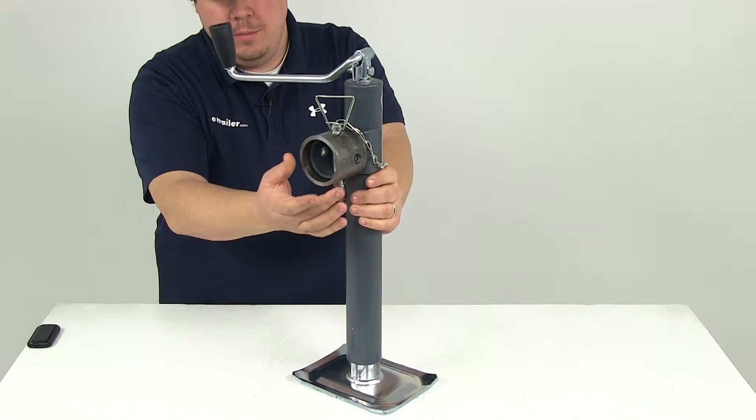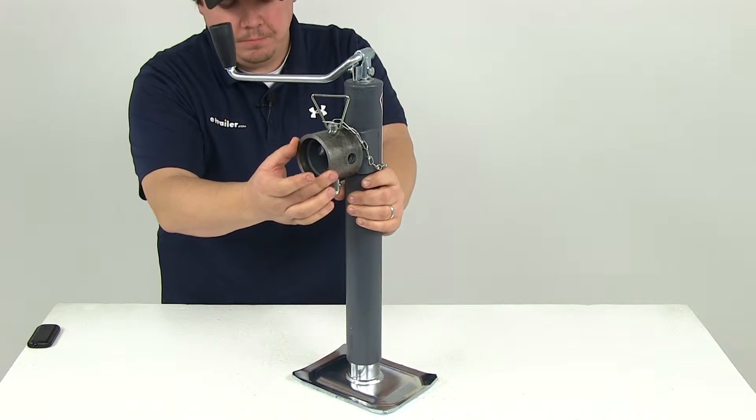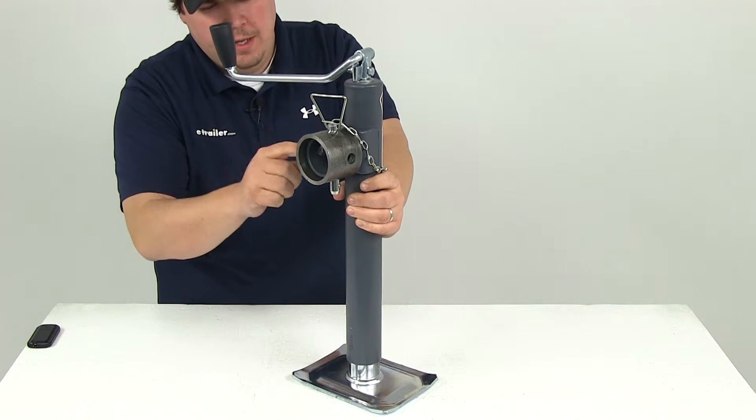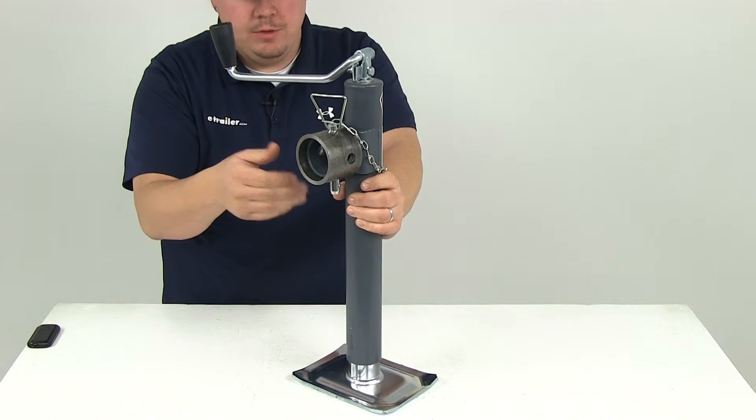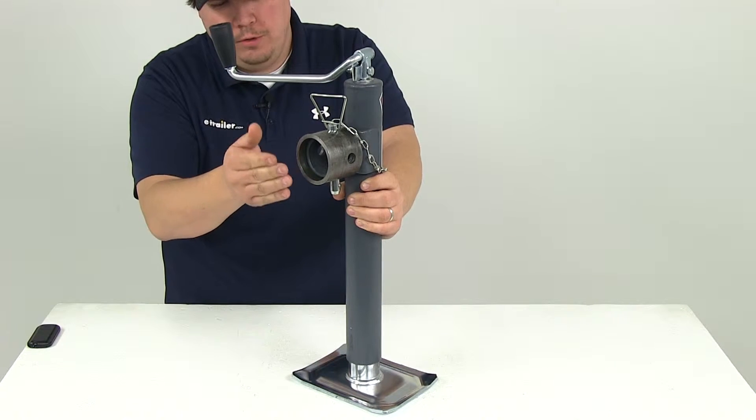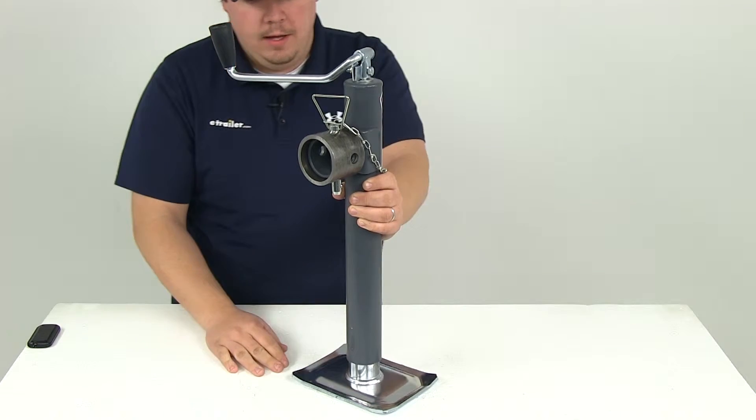This portion right here is the tubular swivel design. This is a weld on pipe mount that's included. You can see that right there. It's got multiple pin holes so you can swivel the jack up when it's not in use or during travel, and then bring it back down when you need to use it.